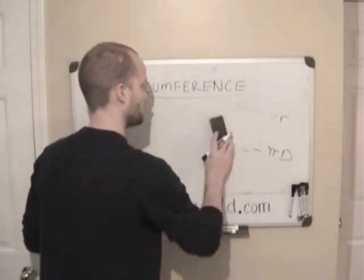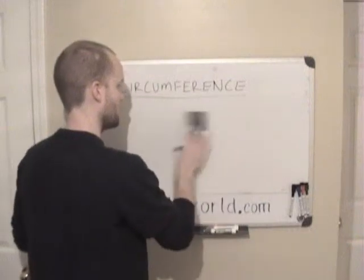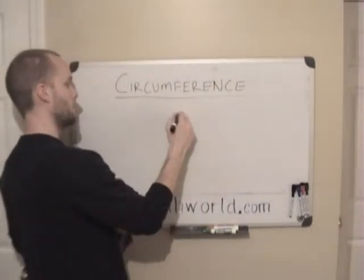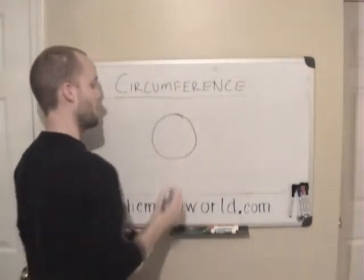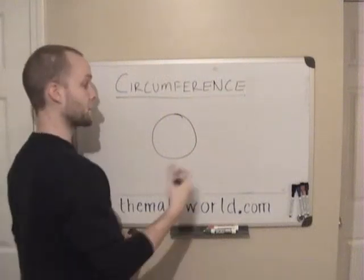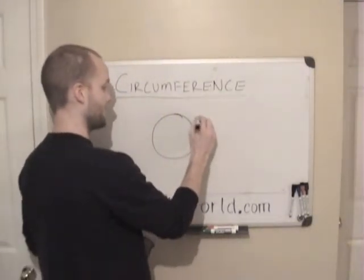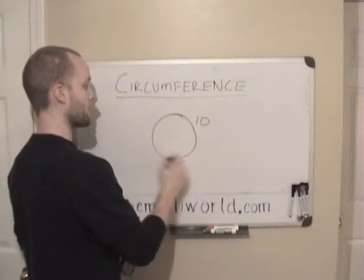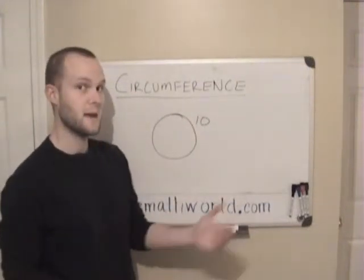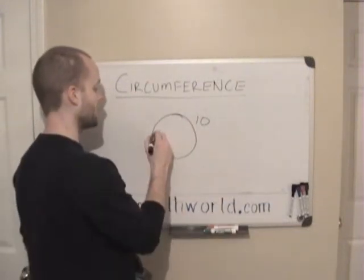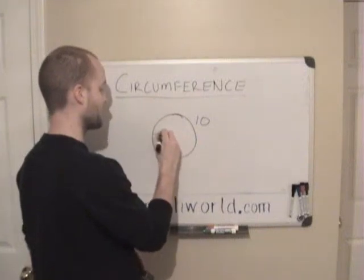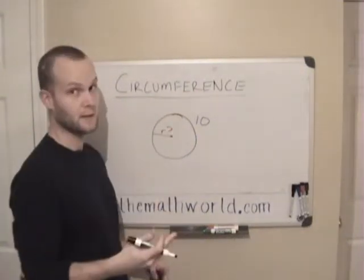Now a lot of times, you'll be given a circle and they may say the circumference is 10. This entire perimeter of the circle is 10, and they may ask you, what is the radius? You're trying to find the radius in this case.